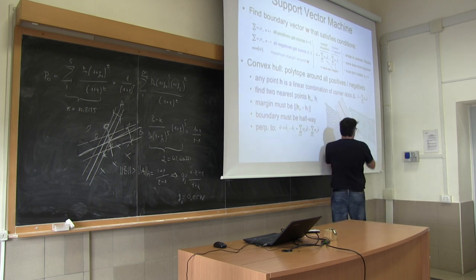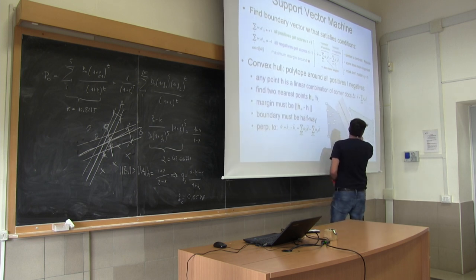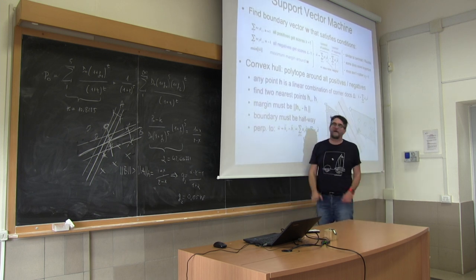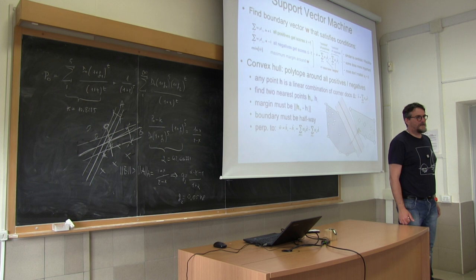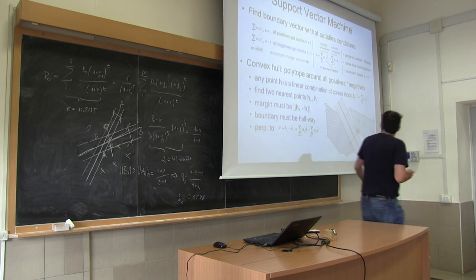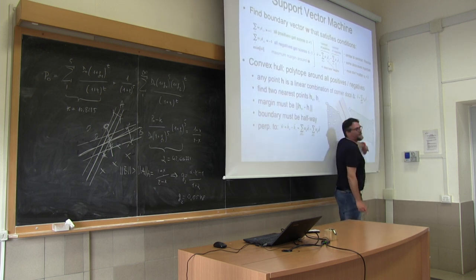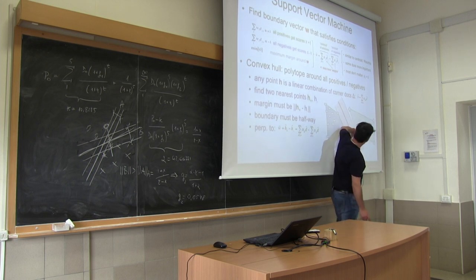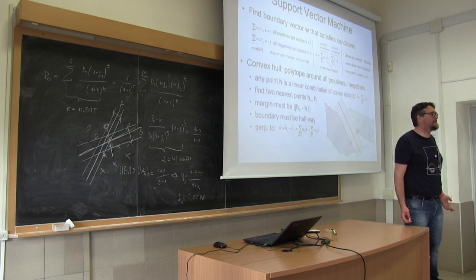Why minus? Because it's the vector difference between the two — this is one vector, this is another vector, this is the difference. I want to minimize this distance. Is it clear why? Because if I take other points, the resulting hyperplane will not separate the classes. The only points that will actually separate the classes are the nearest ones — otherwise I have no guarantee on the separation.